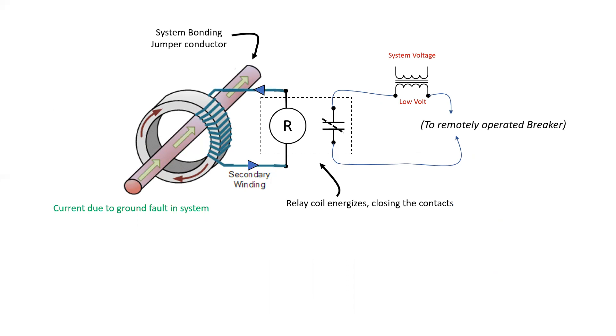Since current is flowing through the secondary of the CT, it will cause a voltage to be developed, which should then energize the coil on our relay. The relay coil energizes, closes the contacts, which then applies voltage to the remote trip mechanism in the breaker and opens the breaker, thereby de-energizing the system.